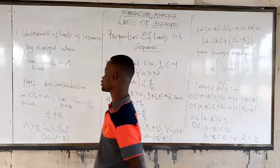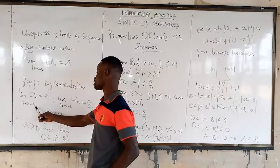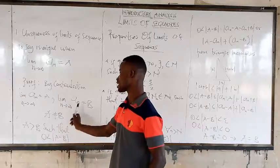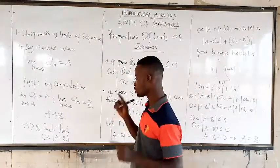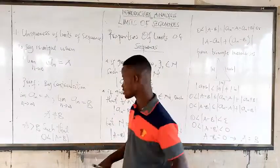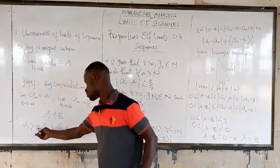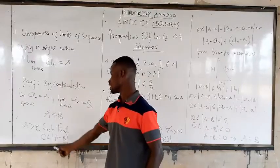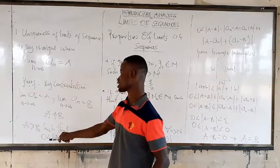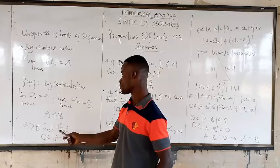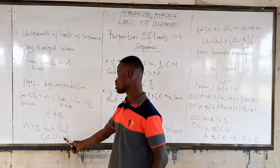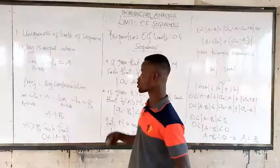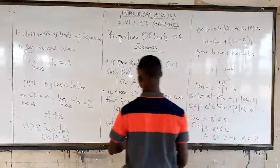By contradiction, we are going to say that the limit of this is equal to A, and the limit of that is equal to B, where A cannot be equal to B. So we are saying A cannot equal B. If A is greater than B such that this is true, that means A is greater than B, because when we subtract B from A, the value we get should be greater than zero.